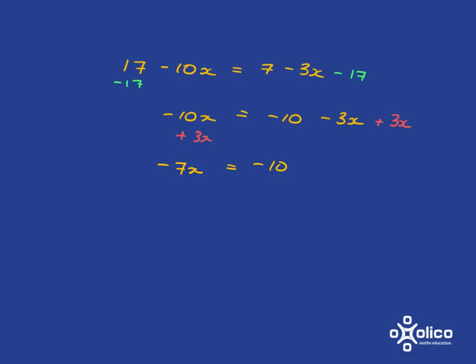We want x on its own. So we need to divide this side by negative 7 and of course balance it, do the same to the other side. Negative over negative is positive, and so we've got x is equal to 10 over 7. That's fantastic!